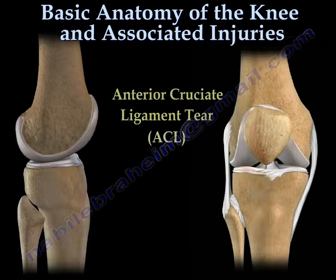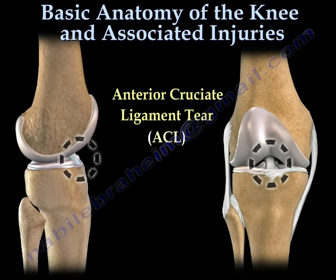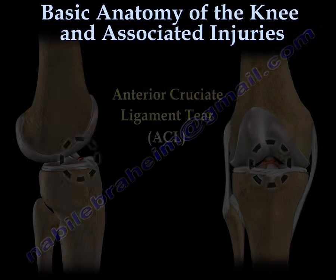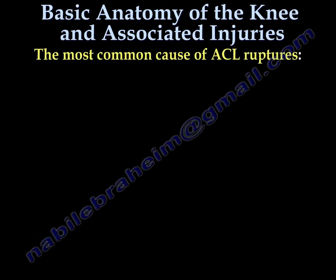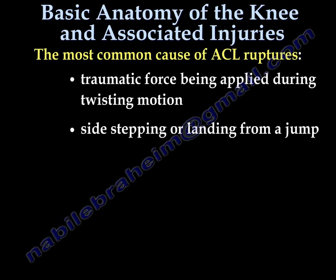When the anterior cruciate ligament is ruptured, anterior translation of the tibia in relationship to the femur will occur. The most common causes of ACL ruptures are due to traumatic force being applied during twisting motion and sidestepping or landing from a jump.